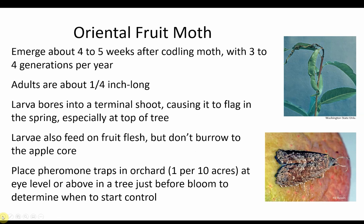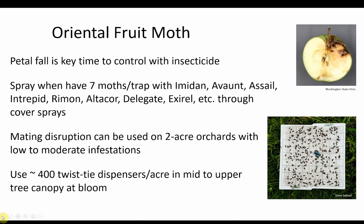The oriental fruit moth is another pest that emerges about a month after the codling moth. Adult moths are about a quarter inch long and there are as many as four generations per year. The larva bores into a terminal shoot causing it to droop in the spring, which often occurs at the top of the trees. Larvae also feed on the apple flesh, but they don't burrow to the core. Pheromone traps can be placed in the upper portion of trees just before bloom to determine when control is needed. Petal fall is often the key time to apply an insecticide, or when there are seven moths per trap. Mating disruption can also be used on orchards that are at least two acres with low to moderate infestations, with about 400 dispensers per acre hung in the mid to upper tree canopy at bloom.